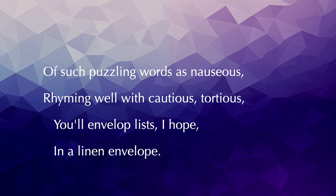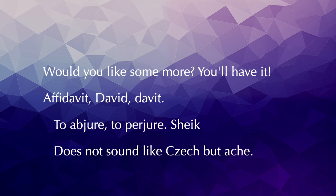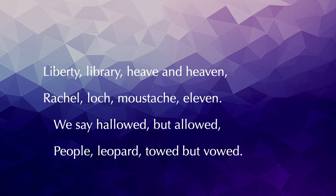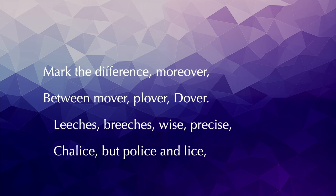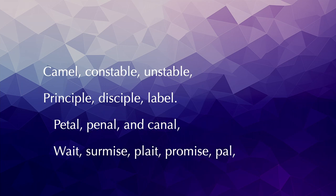Cornice, nice, Felice, revise, rabies, but lullabies. There are such puzzling words as nauseous, rhyming well with cautious, tortious. You'll envelop lists, I hope, in a linen envelope. Would you like some more? You'll have it after — David, David, David. To abjure, to purge — chic does not sound like check but ache. Liberty, library, heathen, heaven, Rachel, ache, mustache, leaven. We say hallowed but allowed, people, leopard, toad but vowed. Mark the difference moreover between mover, plover, Dover.